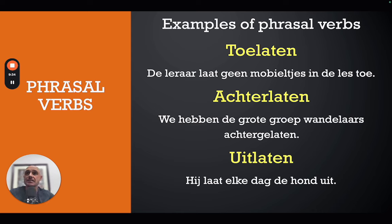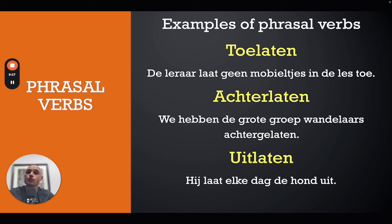Now we look at phrasal verbs in English, which in Dutch translate as compound or separable verbs. Most of these are separable verbs — if you're unsure about that, there's a dedicated video linked below. The first compound verb is 'toelaten,' meaning 'to permit' or 'to allow.' For example, 'de leraar laat geen mobieltjes in de klas toe' — 'the teacher does not permit any mobile phones in class.'